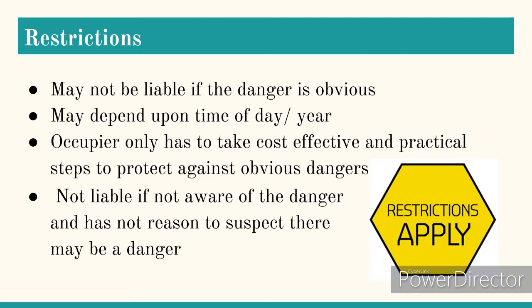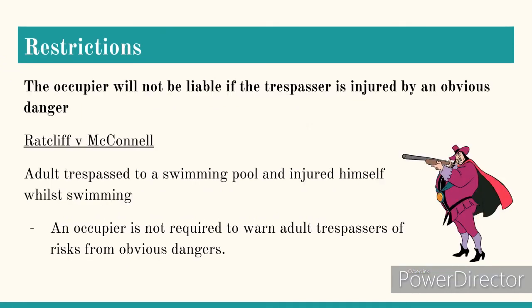Let's look at the restrictions in more detail — each one has a case, and you need to know the restriction and the case to apply it to a scenario. First, the occupier won't be liable if it's an obvious danger — a trespasser is expected to be aware of obvious dangers. In Ratcliff v McConnell, an adult trespassed into a swimming pool, clearly an obvious danger, and injured himself while swimming. This case illustrates that an occupier doesn't need to warn an adult trespasser of the risks of obvious dangers.